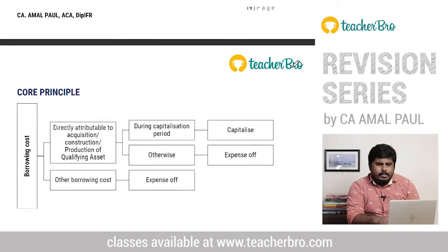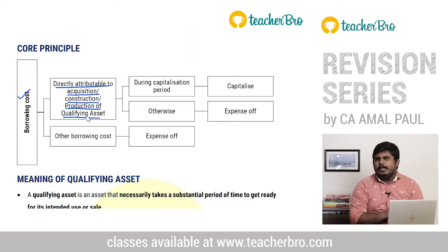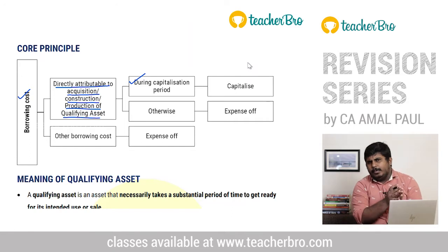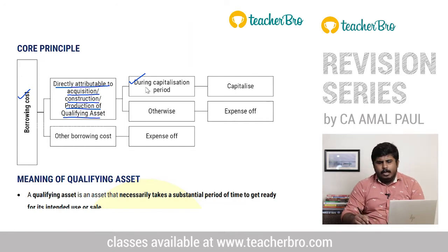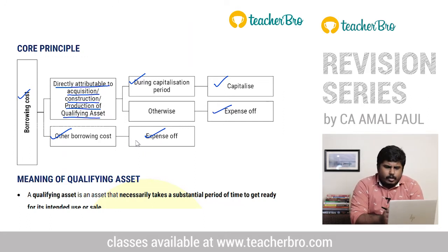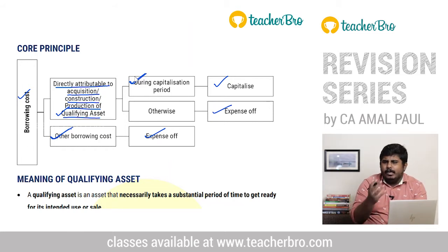This standard has a core principle: borrowing costs directly attributable to the acquisition, construction or production of a qualifying asset shall be capitalized during the capitalization period. All other borrowing costs will be expensed off. To apply this, we should first know what is a qualifying asset, and second, what is the borrowing cost capitalization period.